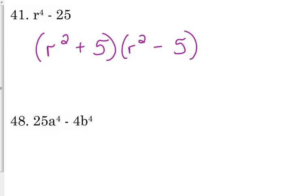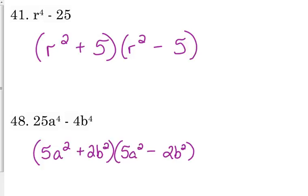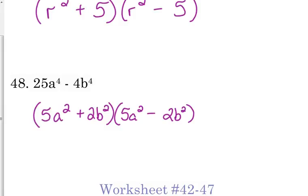Now 48, you can be presented with two variables. And again, these are all perfect squares. 25 and 4 are perfect squares, A to the fourth is a perfect square, and B to the fourth is a perfect square. So 5A² and 5A², 2B² and 2B². It looks really weird, but that's what it is. What times what gives me this, what times what gives me that. So same premise for all of these. So get some of these with the different variables, 42 to 47, the higher powered and then the combination of two.